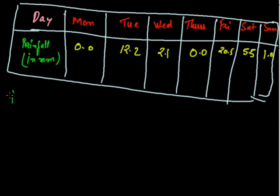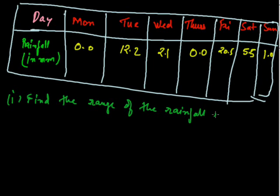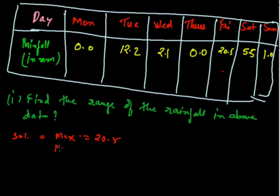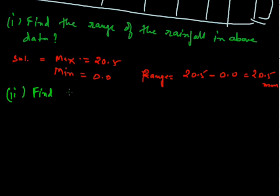Now the first question is find the range of the rainfall in above. The range is maximum rainfall minus minimum rainfall. So the maximum is 20.5 and minimum is 0.0. So the range will be 20.5 mm minus 0.0 mm, that is 20.5 mm.